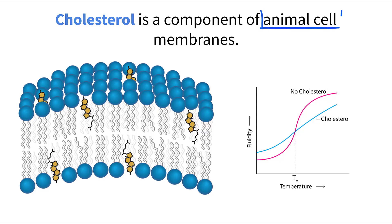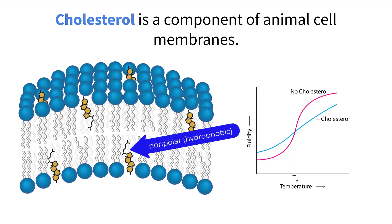Another important structure found in the cell membrane is cholesterol, which is only seen in animal cell membranes. Cholesterol, just like the phospholipids we discussed earlier, is also an amphipathic molecule, meaning it has those polar and nonpolar regions. The hydrophobic part of cholesterol, which is made up of the steroid ring and hydrocarbon tail, can be found embedded within the tails of the phospholipids. The hydrophilic portion of the molecule, which is a hydroxyl group, peaks out between the heads of the phospholipids making contact with the exterior solution.